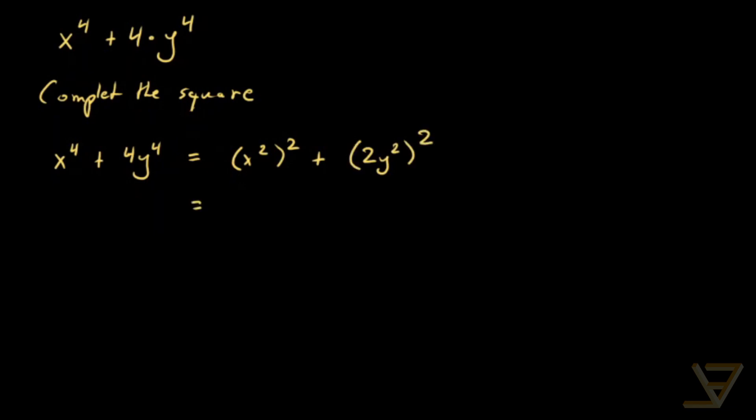And now the middle term that's missing is x squared. We get the middle term is 2x squared times 2y squared plus the square of 2y squared. And now we subtract the middle term to get 2x squared 2y squared.